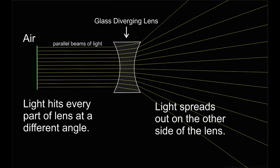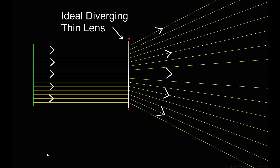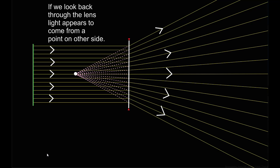A diverging lens differs from a converging lens in that it curves inward at the middle instead of outward. When parallel beams of light are sent into the lens, instead of going through the lens and coming together in a region on the other side, all the beams diverge away from each other and never cross. Like with the converging lens, we are going to use an ideal diverging thin lens. If we trace back the beams that are diverging on the right side straight through to the other side of the lens, they are heading out as if they came from a single point on the left side of the lens.